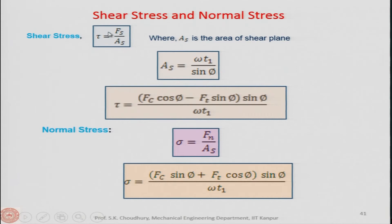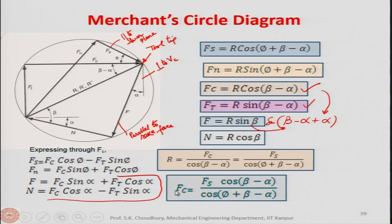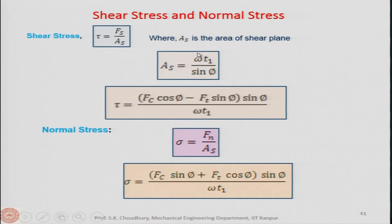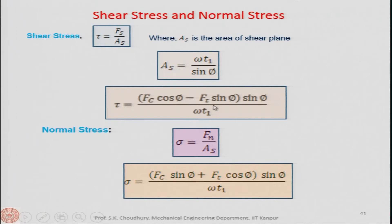The shear stress τs equals shear force Fs divided by the area of the shear plane (W·T1/sin φ). Fs can be expressed as Fc·cos φ − Ft·sin φ, so shear stress τs = (Fc·cos φ − Ft·sin φ)·sin φ / (W·T1). By measuring Ft and Fc and knowing φ, we can find the shear stress analytically.